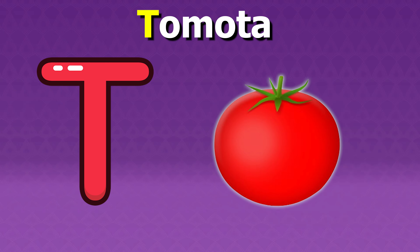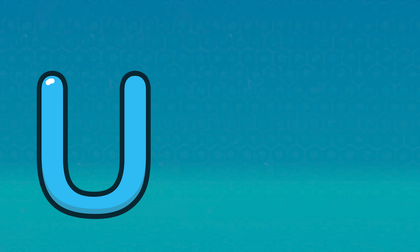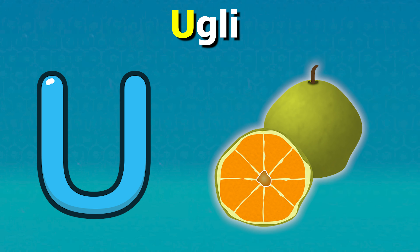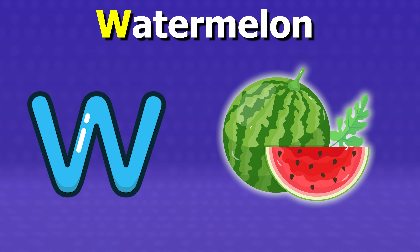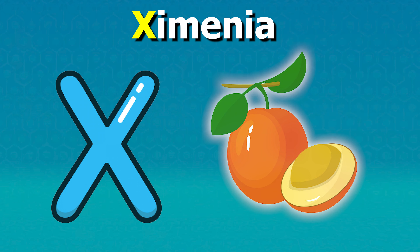S for Strawberries, T for Tomato, U for Ugly Fruit, V for Vanilla, W for Watermelon, X for Zimini.